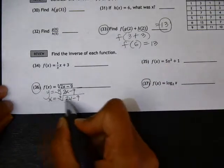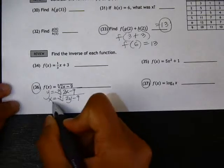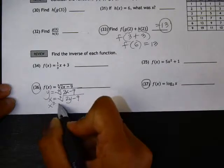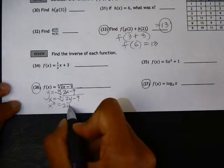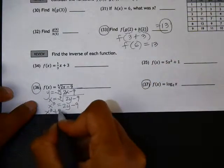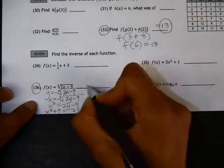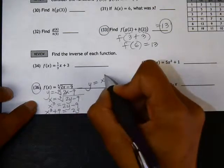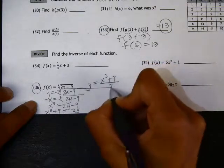So here, if we're isolating y, we need to get rid of the cube root by cubing both sides. And to isolate y, I need to add 9. And my inverse will end up being x cubed plus 9 divided by 2.